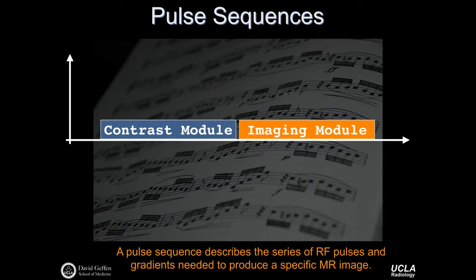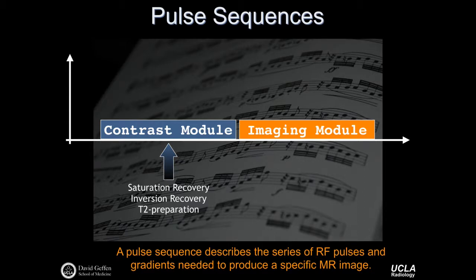Pulse sequences are timing diagrams — a set of instructions that tells the MR instrumentation when to play RF pulses and when to play gradients. We play some RF pulses and possibly gradient pulses to manipulate the contrast of the underlying tissue, as we saw previously when talking about T1 weighting and T2 weighting by changing echo times and inversion times. The pulse sequence diagram describes the series of RF pulses and gradients needed to produce a specific MR image. Contrast modules can include saturation pulses, inversion pulses, and T2 preparation pulses.